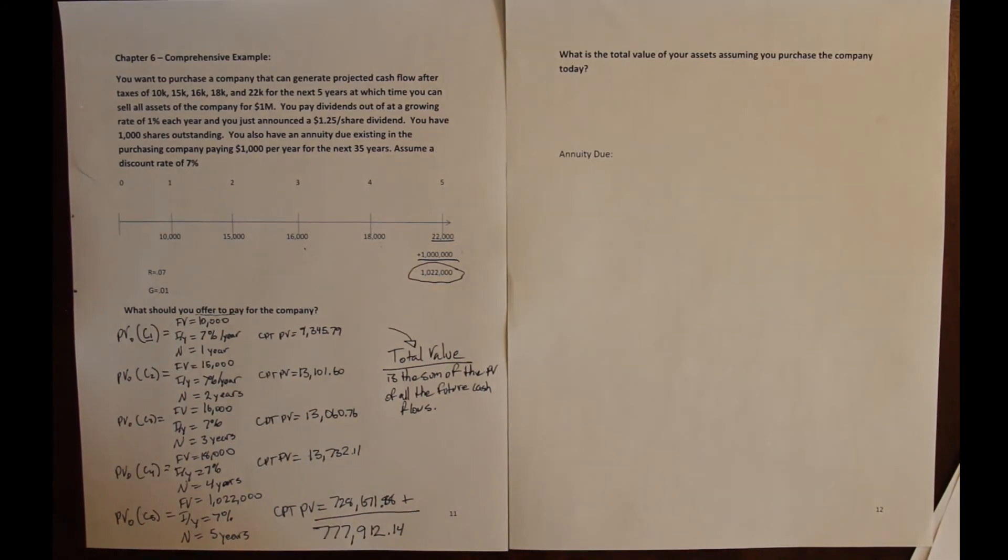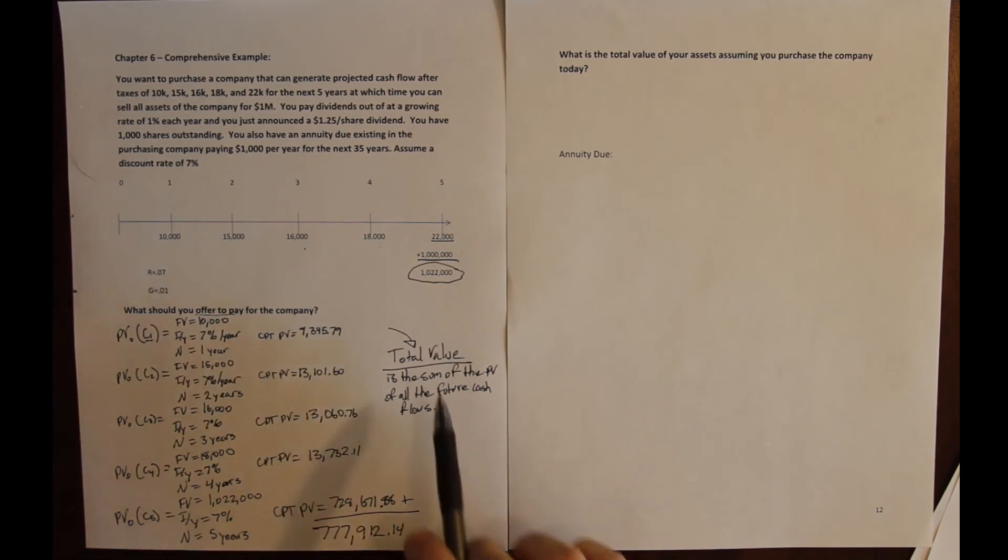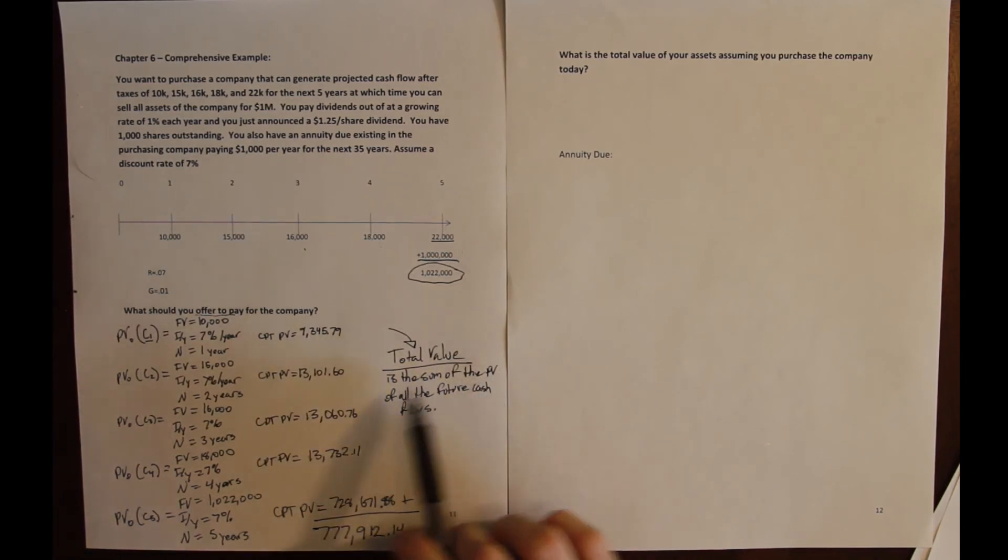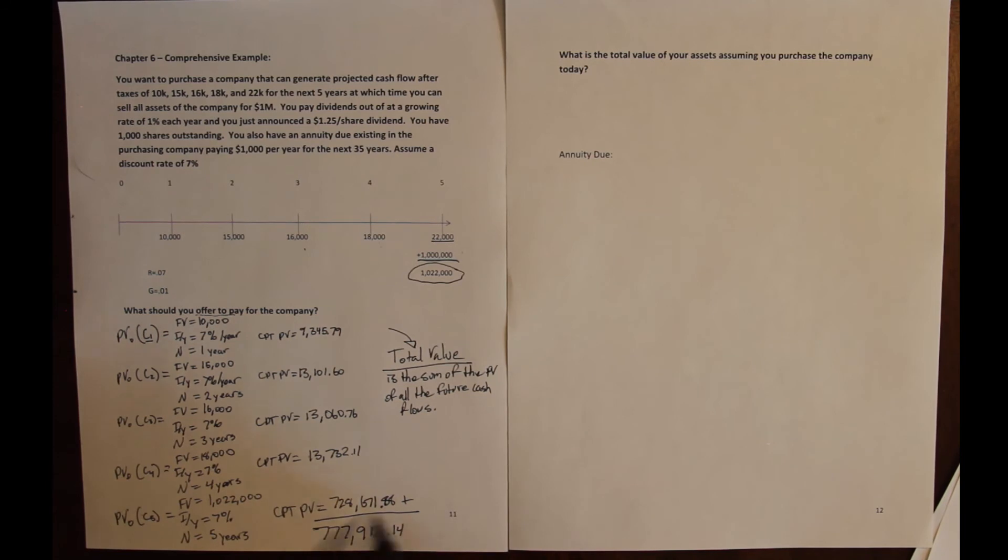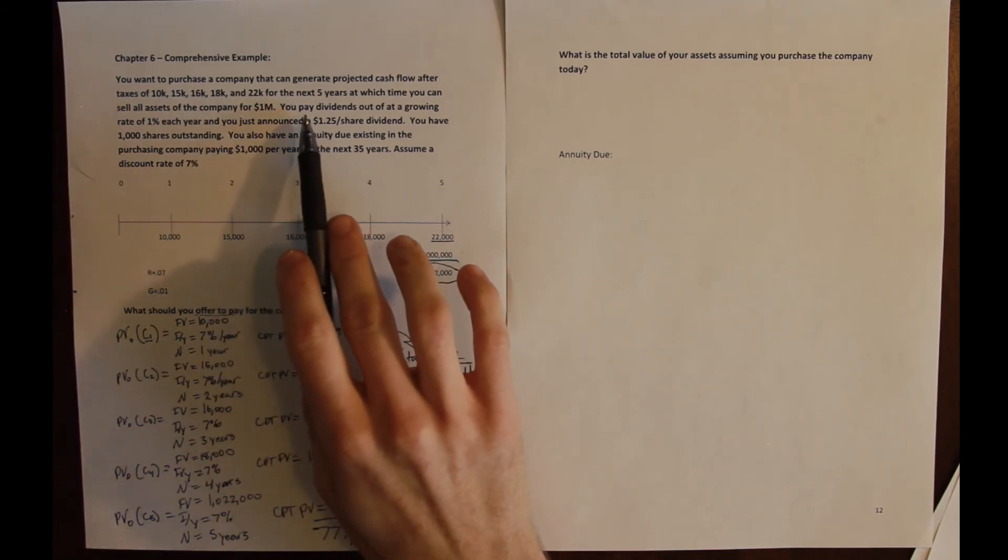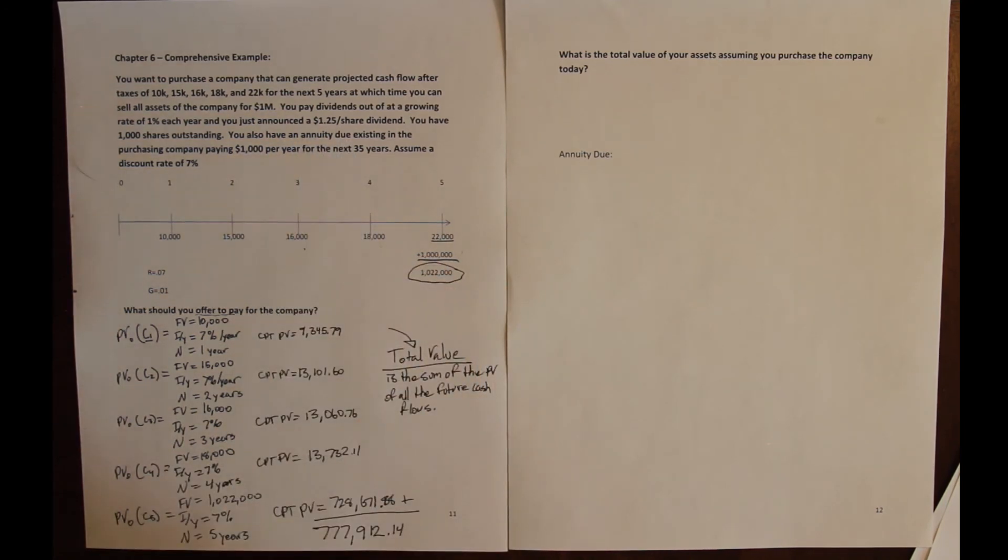Part two of this problem says, if we spend the $777,912 to buy this second company, what is the total value of the combined company? And the total value of anything is the sum of the present value of all the future cash flows. So the combined company is going to have these future cash flows, and we know the present value of those. It is also going to have dividends that are being paid out and an annuity due. So we need to figure out all of those.